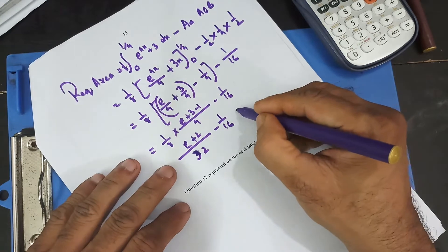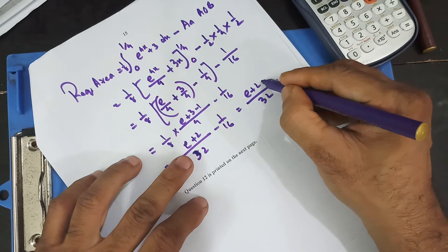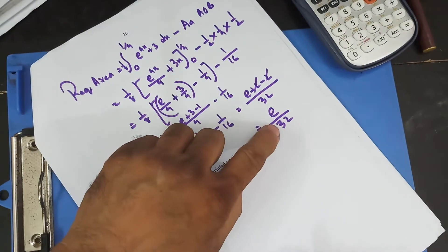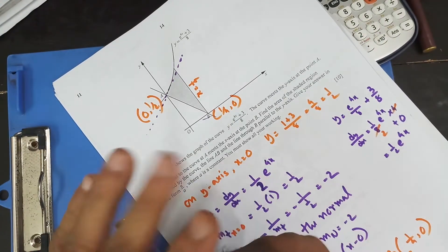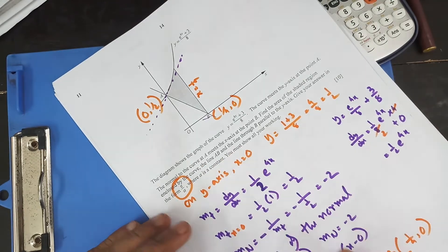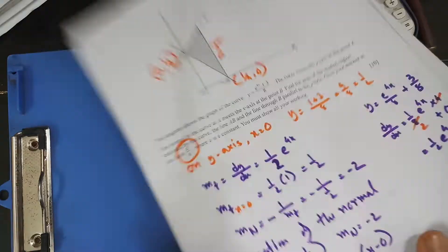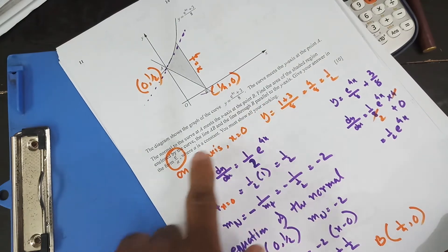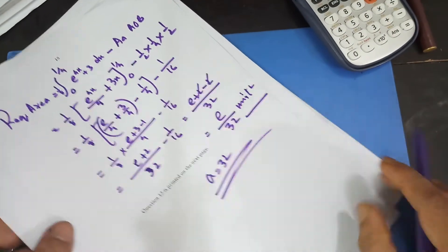So I can write (e + 2)/32 minus 1/16, and simplifying: e/32. It says give your answer in the form e/a where a is a constant — so a = 32. The area is e/32 square units, and a = 32.